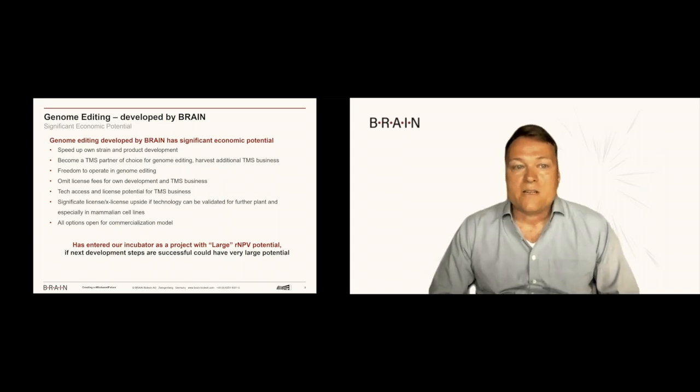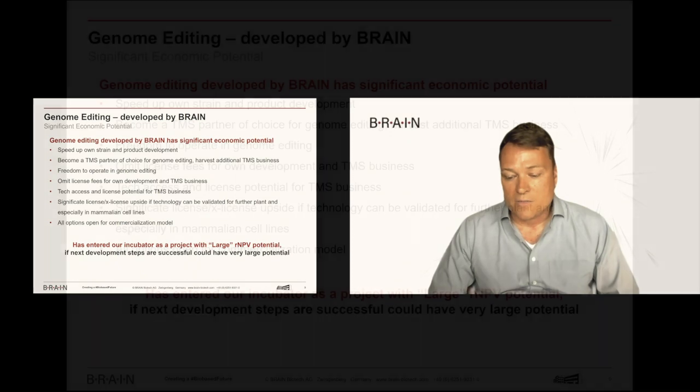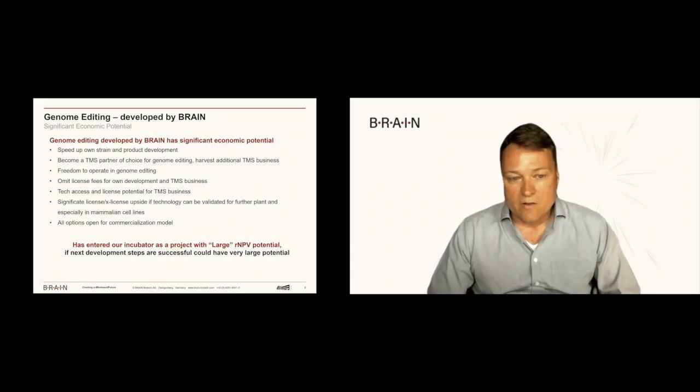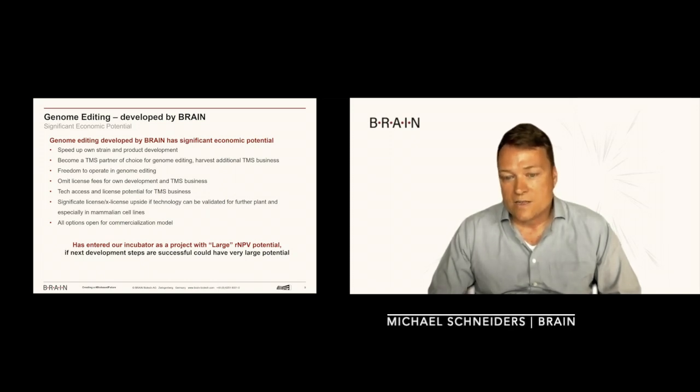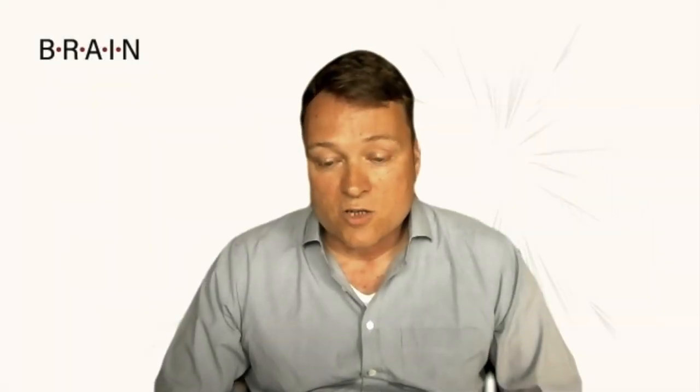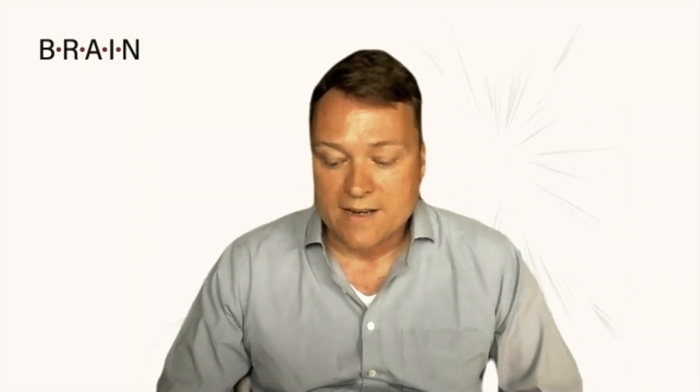Looking at what this means for the economic potential of Brain, first of all, it would speed up all the strain and product development. We can already use it today in projects, so that is already good news for us. You omit license fees for the development of TMS business for the Cas9 technology, that's also good news. And of course, if you can prove that that technology works in plants and in mammalian cell lines, there's significant licensing potential which we can have to the pharma and diagnostics industry and to other players in biotechnology. So very, very exciting business model for us. It will enter our incubator as a project with large risk net present value potential. It could become very large if it extends to plants and particularly to mammalian cell lines. So that technology alone could significantly change the picture of Brain going forward if we're successful developing technology to market and make a license model out of that.